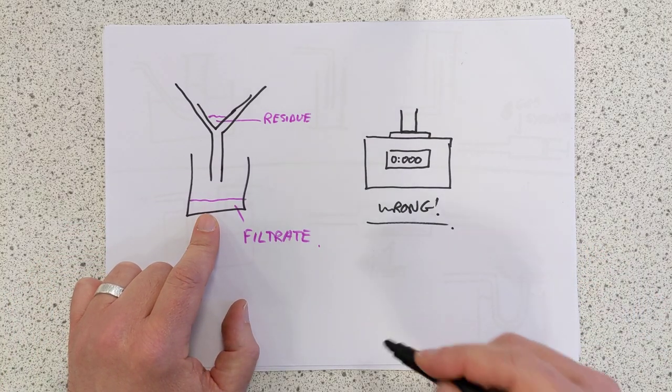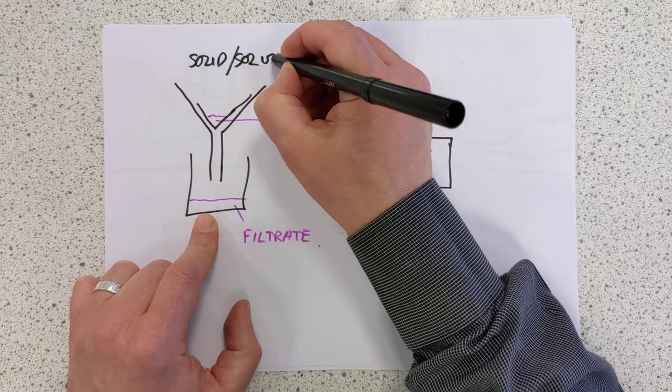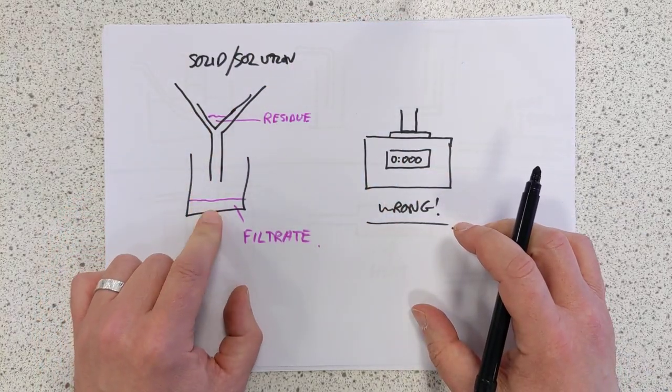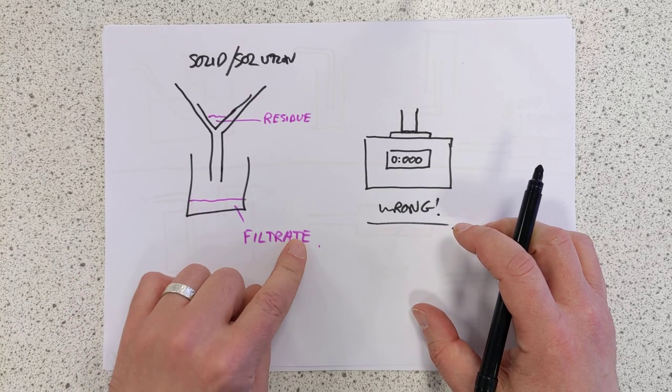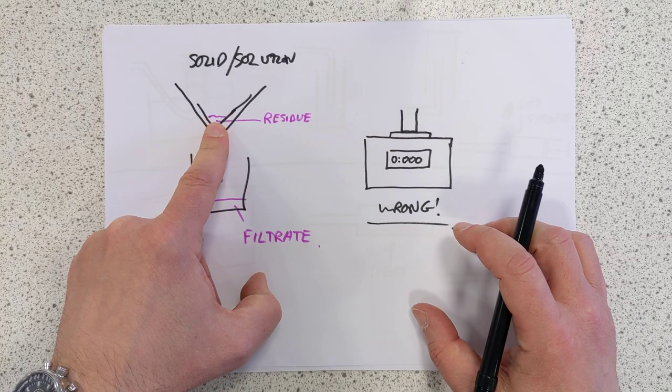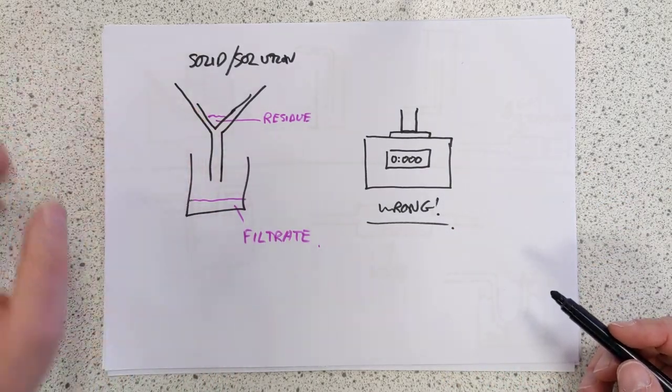Filtration, basically, this is for a mixture of a solid and a solution. Pour it through a filter paper. You get the dissolved solute down here, so that's called a filtrate, and then you get your solid residue, it's called, trapped in the filter paper. Take it away, dry it, and then you get your product.